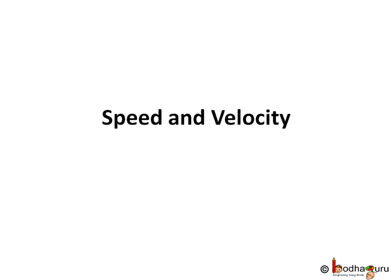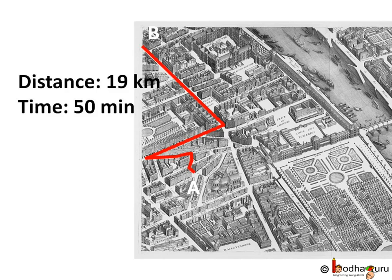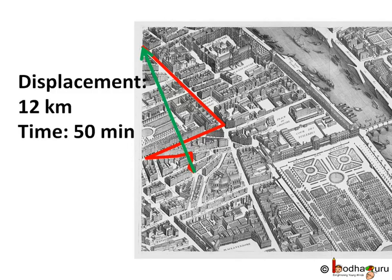Hello friends, in this lesson we shall learn about speed and velocity. Let's start with where we left in our previous lesson. Say you went from point A to point B to meet your friend and you covered a distance of 19 km in 50 minutes. But your displacement was just 12 km in the northwest direction. So displacement is the measure of the straight line between your starting and ending point and it has a direction. And distance is the measure of the actual path taken.